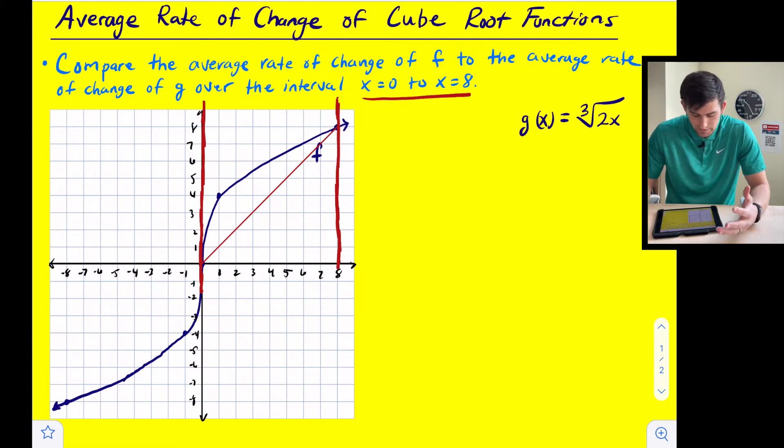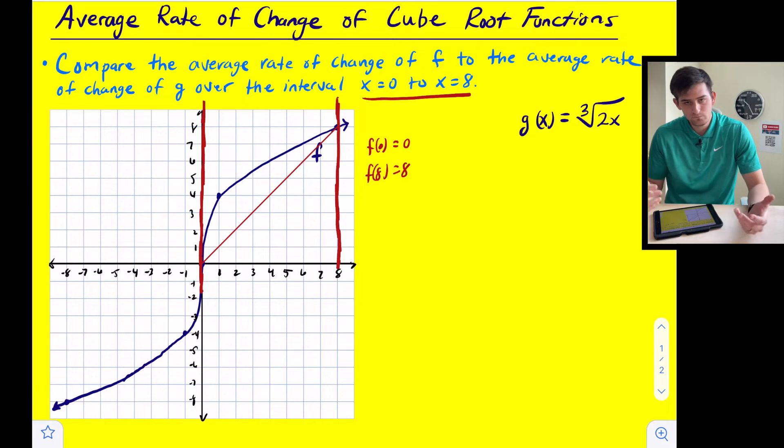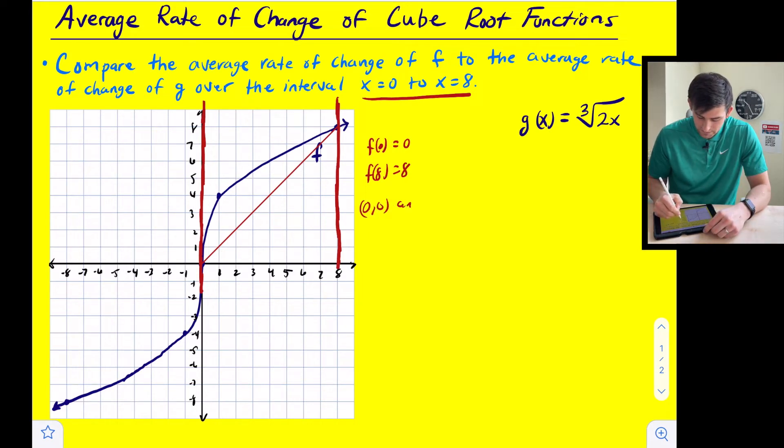So all we want to do now is just find the slope between those two points. So when x is 0, y is 0, and when x is 8, y is 8. So now if we find the slope between them, it's just 8 minus 0 over 8 minus 0, we get 8 over 8, which is just 1.